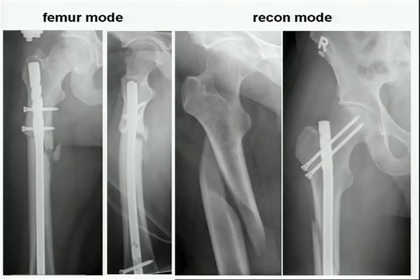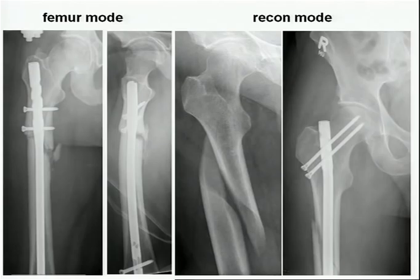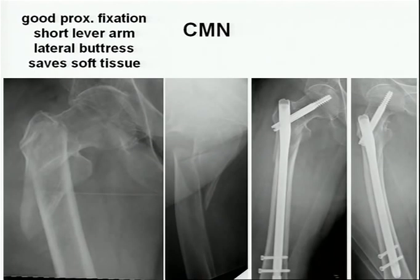You can choose between the femur mode — only suitable for very low sub-trochanteric fractures due to limited proximal fragment fixation, especially in rotation — and second-generation IM nails such as the recon mode, which provides better proximal fixation. With new cephalomedullary nails, you have good proximal fixation, a short lever arm, lateral buttress from the metal in the greater trochanter, and soft tissue preservation through the percutaneous procedure.